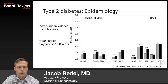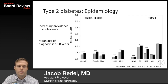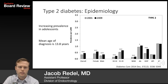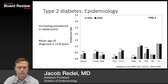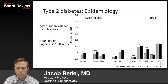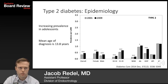It's important to understand the epidemiology of type 2 diabetes. In adolescents and young adults, type 2 diabetes is increasing, with a mean age of diagnosis of nearly 14 years. The incidence is increasing in females and males, across age groups, and across racial and ethnic groups. There is increasing prevalence in non-Hispanic whites, African Americans, and Hispanics. American Pacific Islanders and American Indians have higher baseline prevalence, but their trend did not increase per the most recent Search for Diabetes Youth Study.